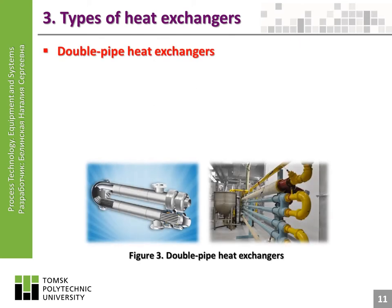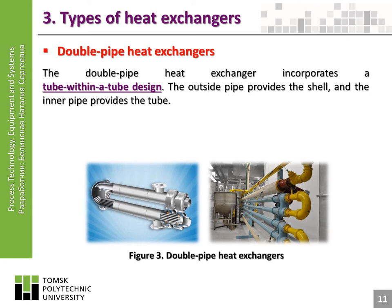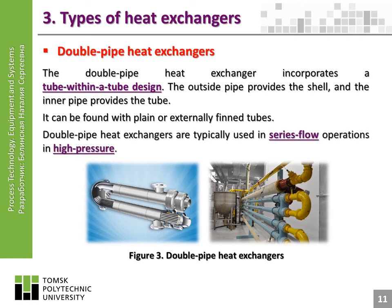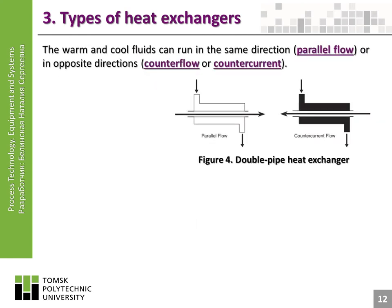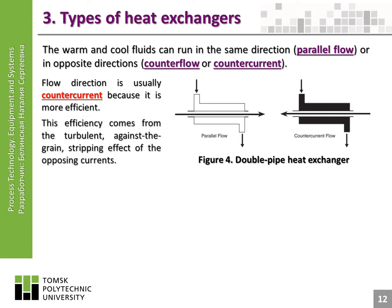Double pipe heat exchangers. The double pipe heat exchanger incorporates a tube-within-a-tube design. The outside pipe provides the shell, and the inner pipe provides the tube. It can be found with plain or externally finned tubes. Double pipe heat exchangers are typically used in series flow operations at high pressure. The warm and cool fluids can run in the same direction (parallel flow) or in opposite directions (counterflow or countercurrent). Flow direction is usually countercurrent because it is more efficient, due to the turbulent, against-the-grain stripping effect of the opposing currents.